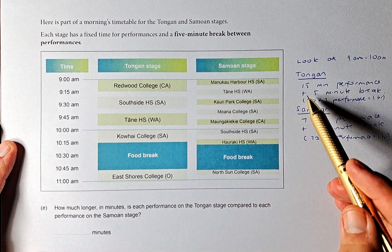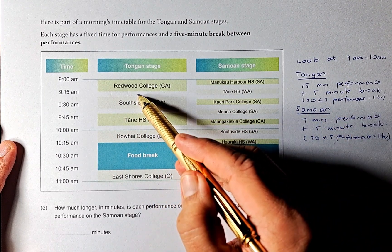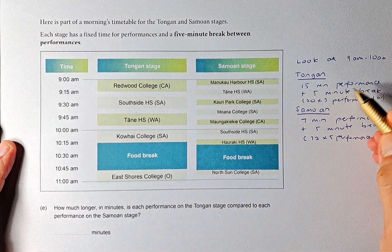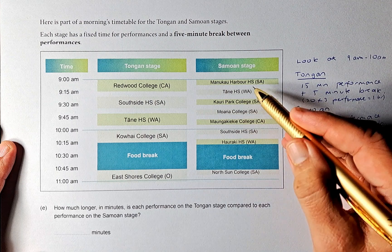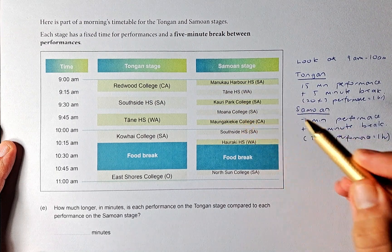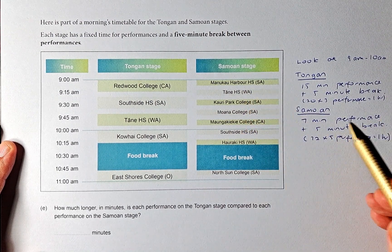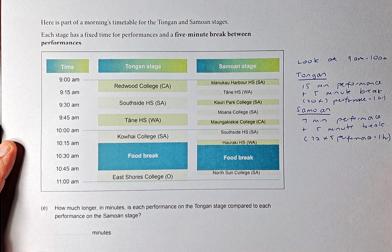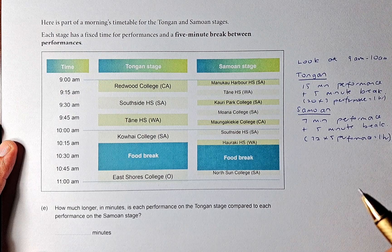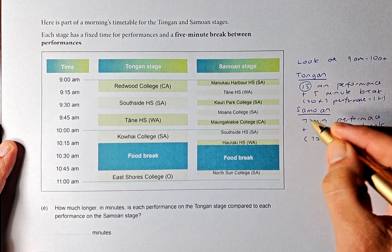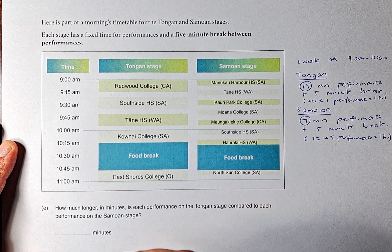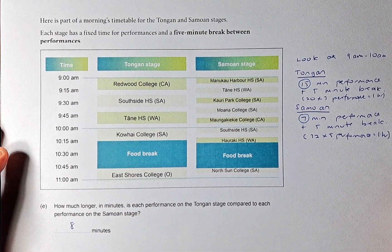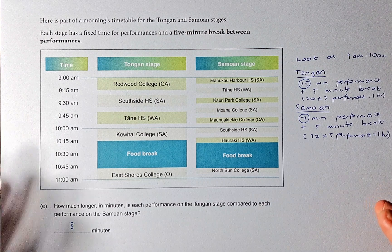Looking at 9 to 10, for example, there are 3 events. With a 5-minute break in between, a 15-minute performance plus a 5-minute break makes it 20 minutes — two of those make 1 hour. So Tongan has a 15-minute performance with a 5-minute break. For the Samoan stage, there are 5 performances with a 5-minute break. That gives a 7-minute performance: 7 plus 5 is 12, and 12 times 5 performances also gives 1 hour. So how much more is Tongan compared to Samoan? Tongan is 15 minutes, Samoan is 7 minutes — so Tongan is 8 minutes more. That is question 4E, and it covers Outcome number 2.